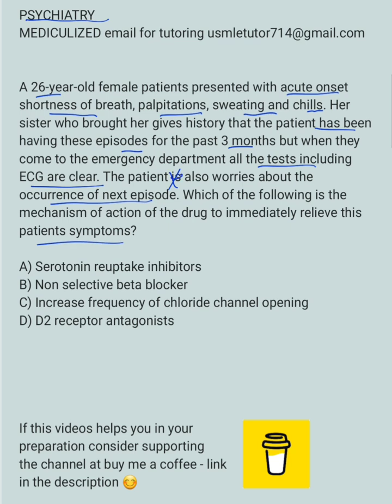If you look at this, this is episodic. There are episodes that include shortness of breath, palpitations, sweating, and chills. Remember the patient still has active symptoms, so they want to know what will be the immediate next step to relieve this patient's current symptoms. Also remember that they said there is increased worry about the occurrence of the next episode. So this is classic for a panic attack — this is a panic disorder.